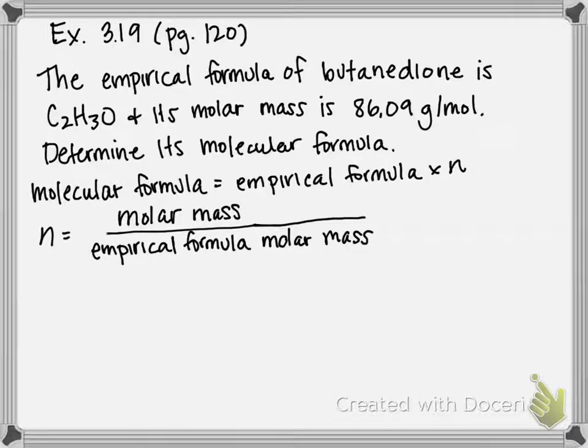This is example 3.19 on page 120 of our text, and this is the last example in this chapter we're going to be working together. In the last two examples, we figured out how to find the empirical formula from experimental data, but what if you are trying to find the molecular formula for something?